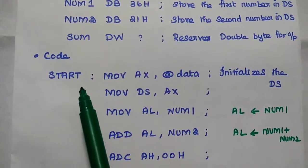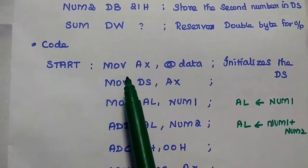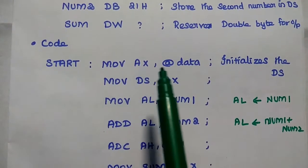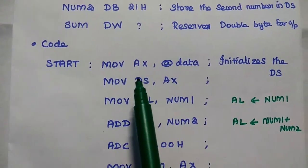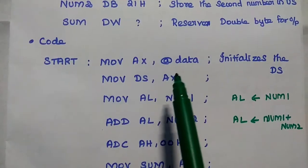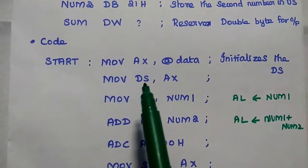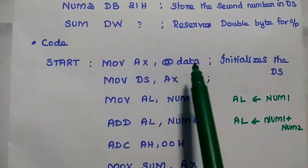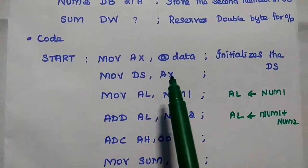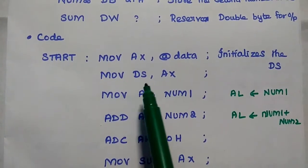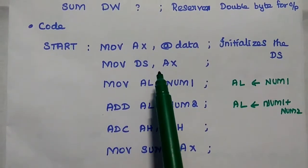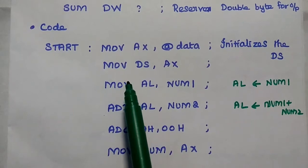Let us start with the label 'start'. The first instruction is to move the data segment address to the AX register — AX is the accumulator register. Then we move AX to DS, where DS represents the data segment location. That value has to be given to the data segment.